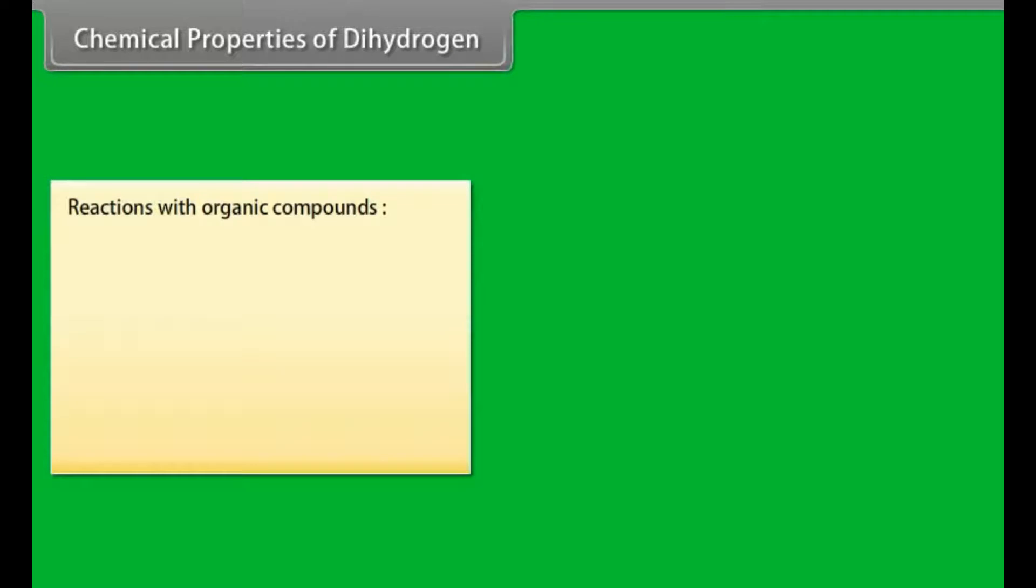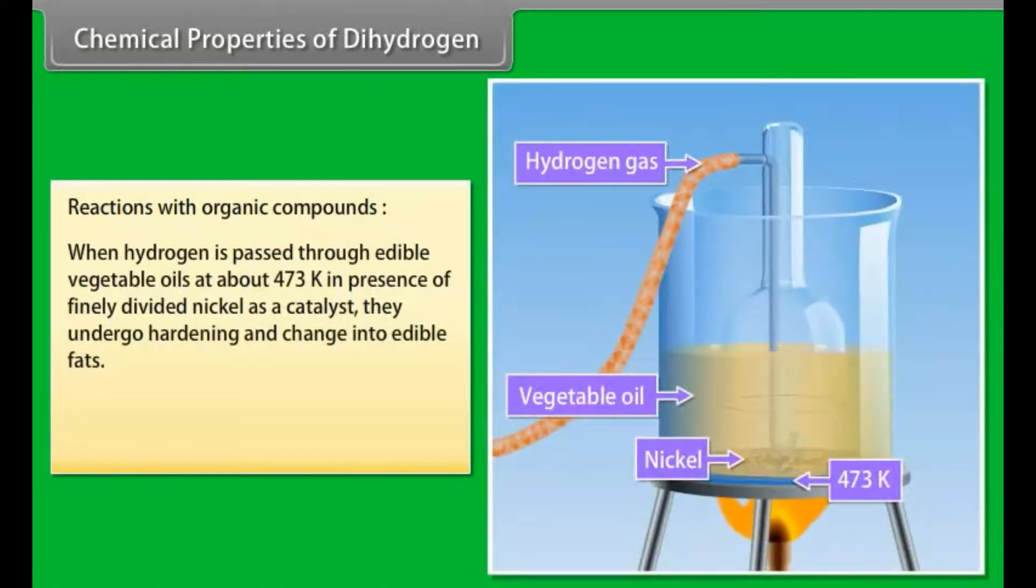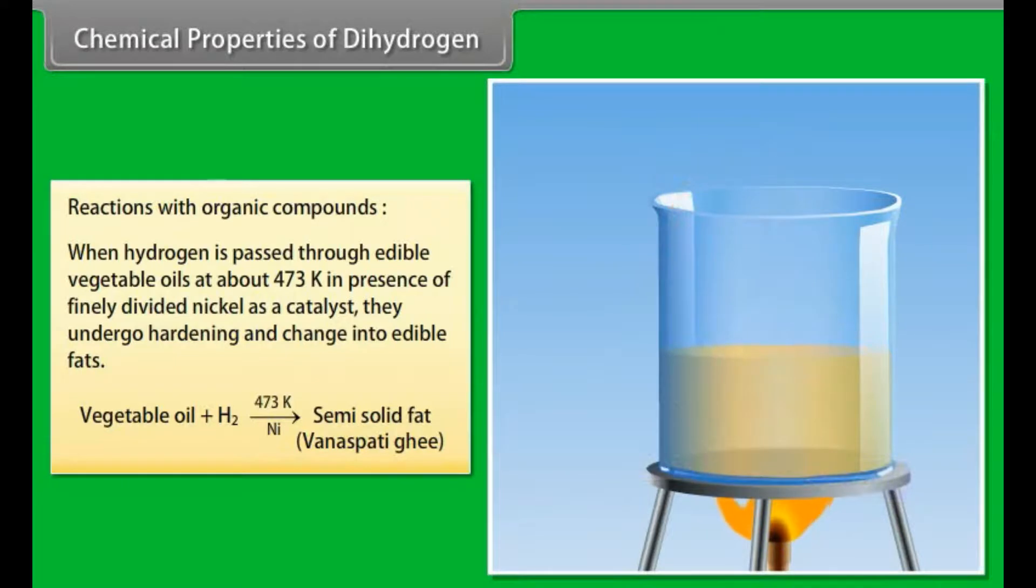Reactions with organic compounds: When hydrogen is passed through edible vegetable oils at about 473 Kelvin in presence of finely divided nickel as a catalyst, they undergo hardening and change into edible fat.